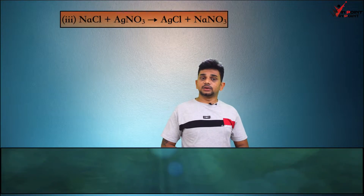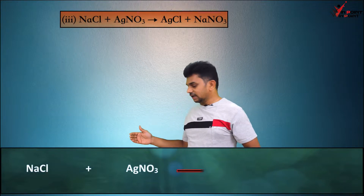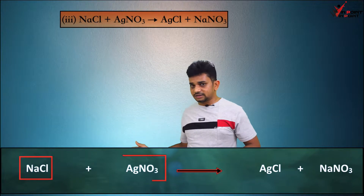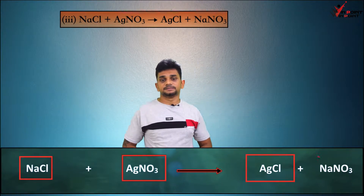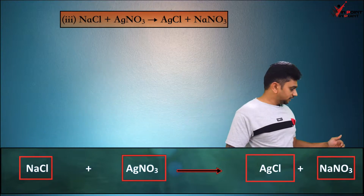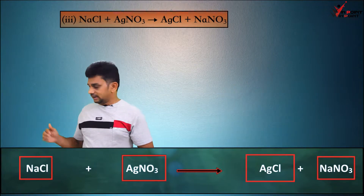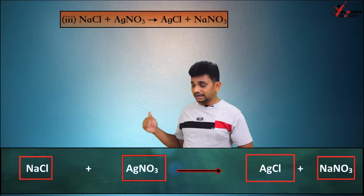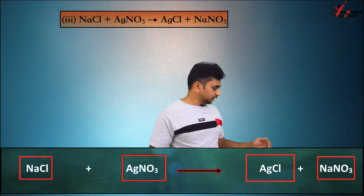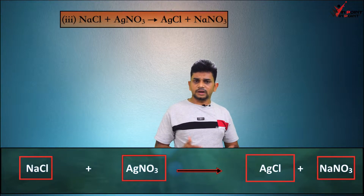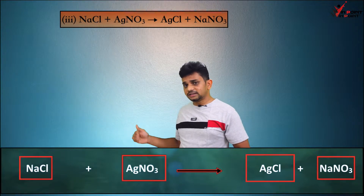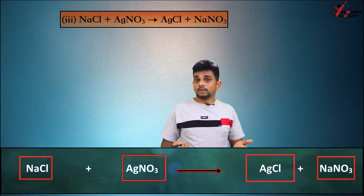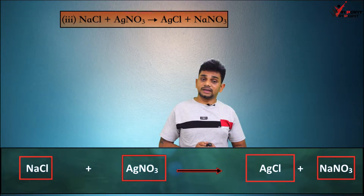Next equation: NaCl + AgNO3 → AgCl + NaNO3. Reactants are NaCl and AgNO3; products are AgCl and NaNO3. Counting atoms: NaCl has 1 sodium, NaNO3 has 1 sodium — equal. NaCl has 1 chlorine, AgCl has 1 chlorine — equal. AgNO3 has 1 silver, AgCl has 1 silver — equal. NO3: AgNO3 has 1 NO3, NaNO3 has 1 NO3 — balanced. So it is already a balanced equation: NaCl + AgNO3 → AgCl + NaNO3.